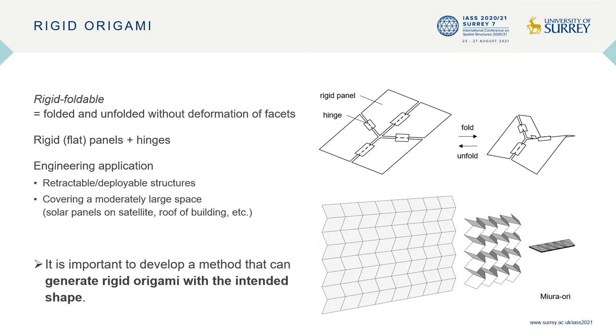Rigid origami is a kind of polyhedral origami which can be folded without deformation of its facets. This folding mechanism is called rigid foldable. This property is well suited to engineering applications, especially for deployable structures. To apply rigid origami to architectural purposes, it is important to develop a method that can generate rigid origami with intended shape.